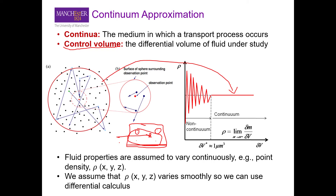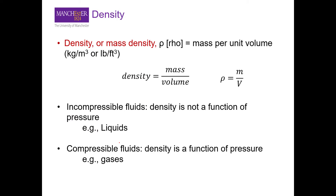Let's look at some of the properties now. Some are fairly obvious — for example, density is pretty obvious: it is mass per unit volume, in kilograms per cubic meter or pounds per cubic feet. Based on density, we can characterize fluids in two groups. Incompressible fluids are those where density is not a function of pressure — you cannot compress these fluids. For example, if you have a beaker with a liquid inside, by increasing pressure you cannot compress it, and the density will not change.